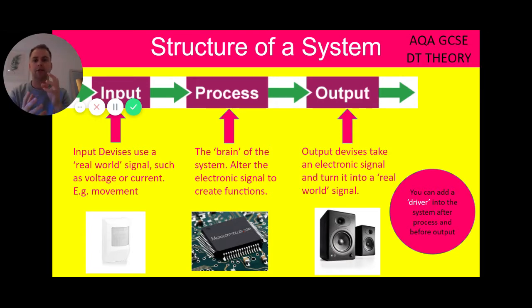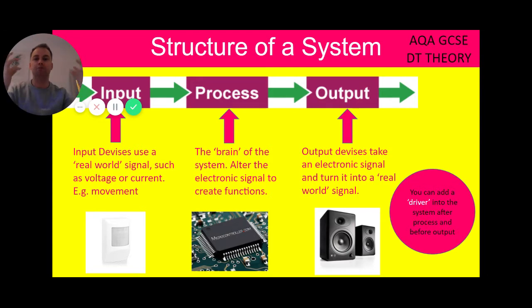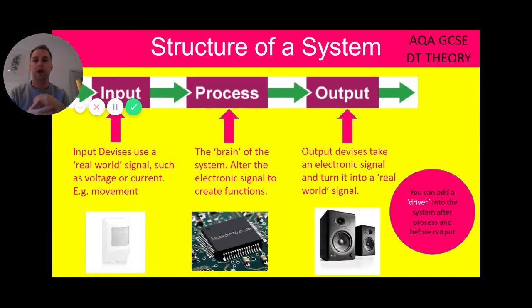A good example is think of the motion detectors linked to your alarm system in your house. That's your input. In this case, your input would be your movement — it's a real world action. Once we've walked past the motion sensor, we then go into process. Now this is the brain of the system. It alters the electronic signal to create functions. We've walked past the motion sensor and now the motion sensor will be identifying what to do with that information — so it will process that information.